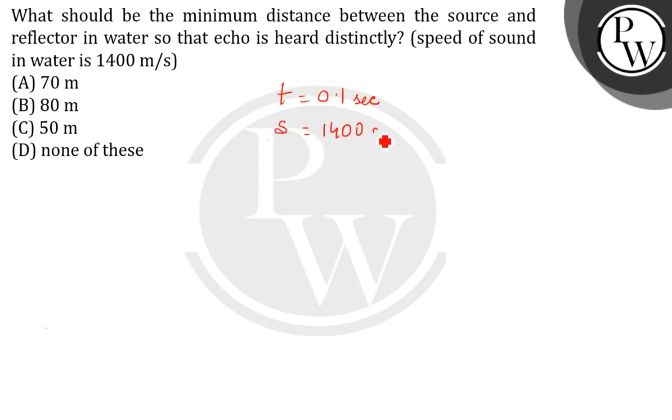Speed in water is 1400 meters per second. The distance will be from the source to the reflector and back after it gets reflected and reaches the source, so the distance will be d plus d equals 2d.